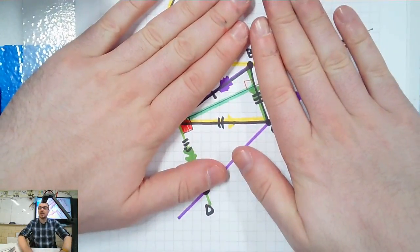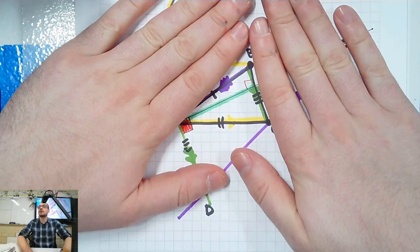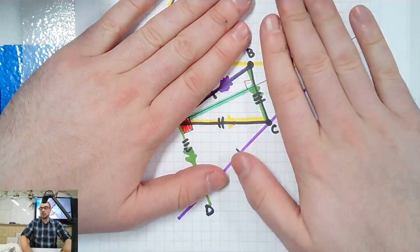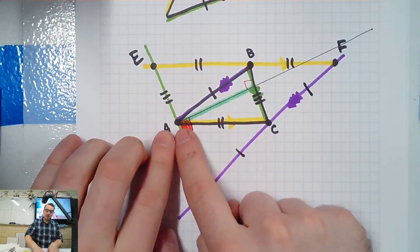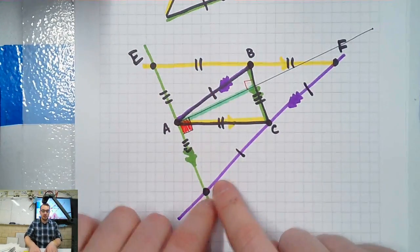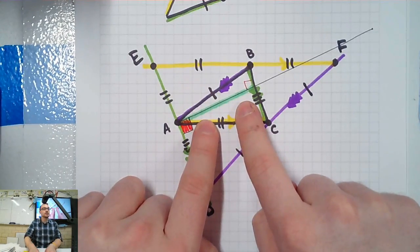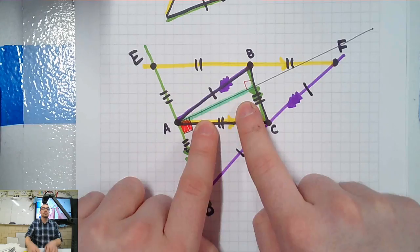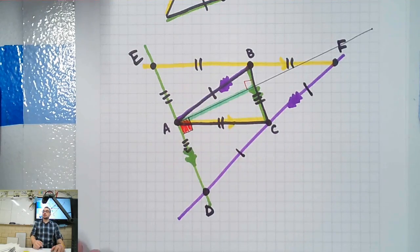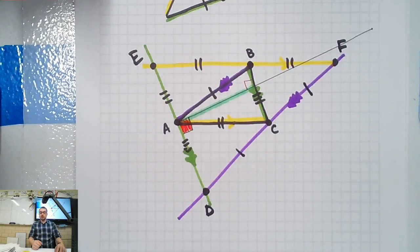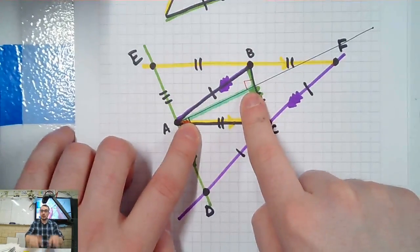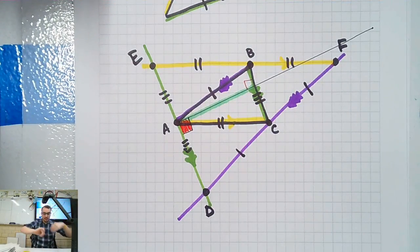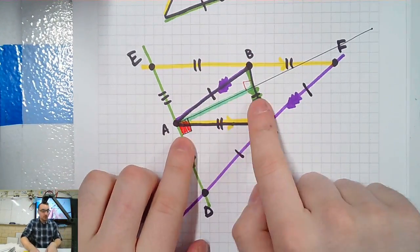Now, we proved yesterday that perpendicular bisectors always intersect at one point. So if these are always going to intersect at a point, then these will too. I'm jumping the gun a little bit — let me back up. So I'm going to do the same thing here: 90 degrees from there.